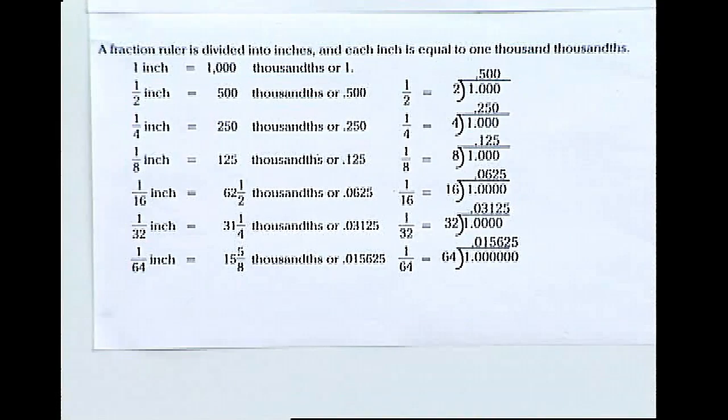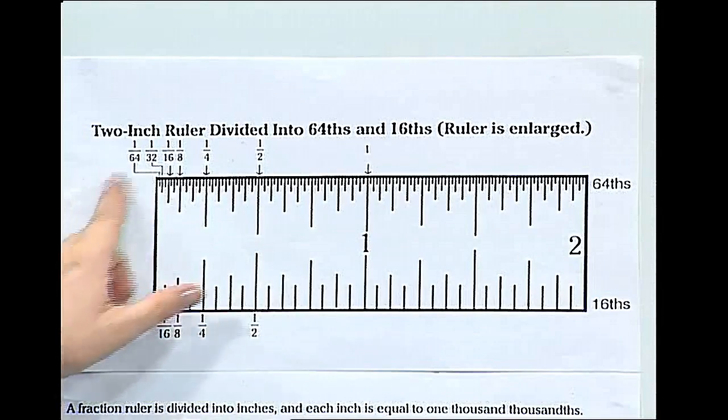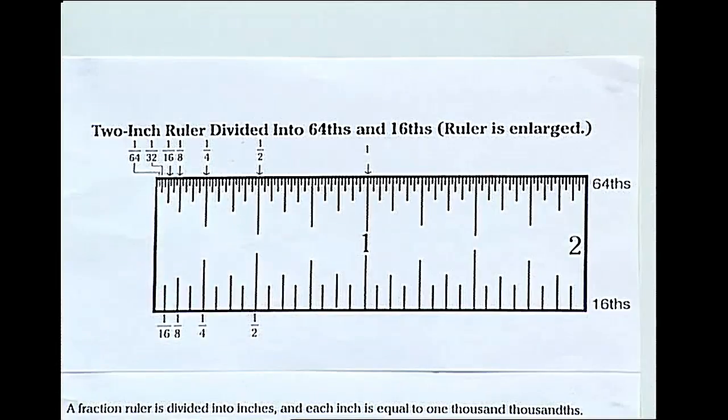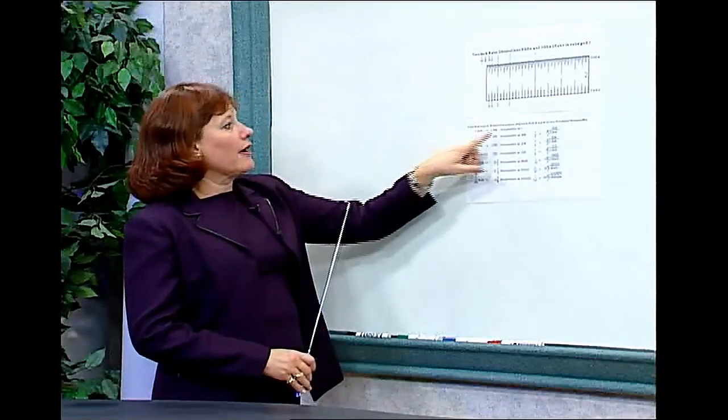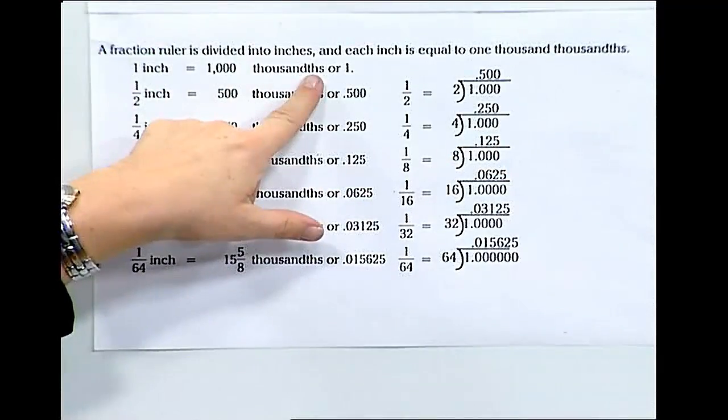If one inch has sixteen sixteenths or sixty-four sixty-fourths of an inch, it's easy to imagine that if the ruler were divided into thousandths, we would have one thousand thousandths in each inch.